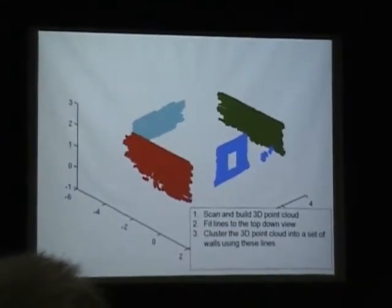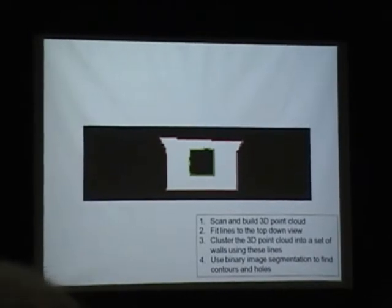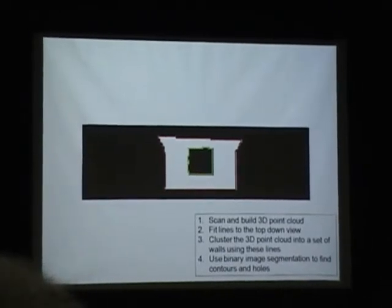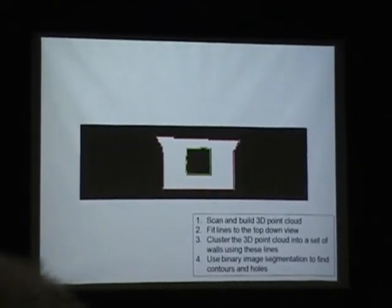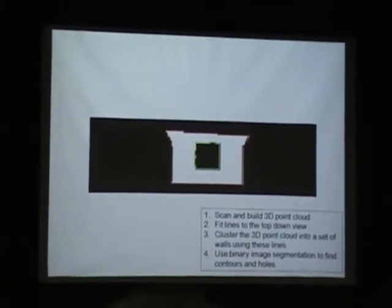We can then look at each wall individually and basically create an occupancy grid — a frontal view representation — which we can then use with binary image segmentation techniques to extract the actual window itself.